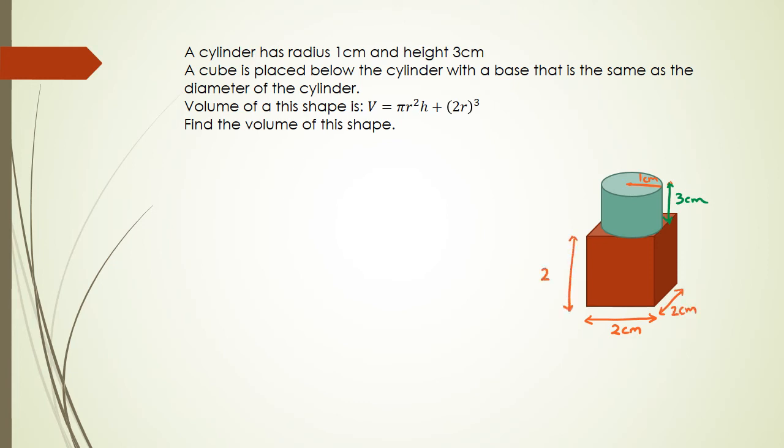We have been given r = 1 and the height of the cylinder is 3. We're given the volume function: V = πr²h + (2r)³.